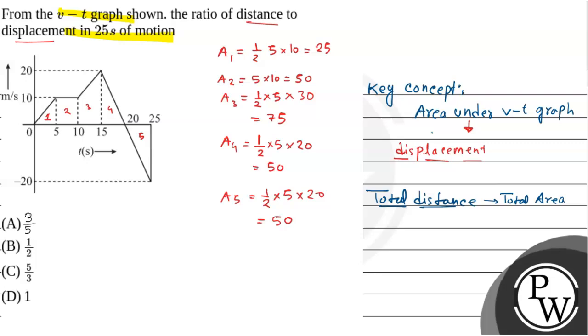So total distance will be sum of the areas, that is 25 plus 50 plus 75 plus 50 plus 50. This equals 250.